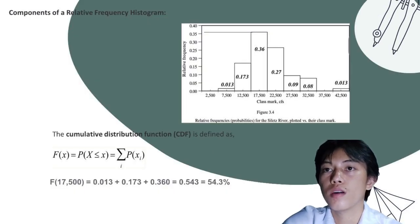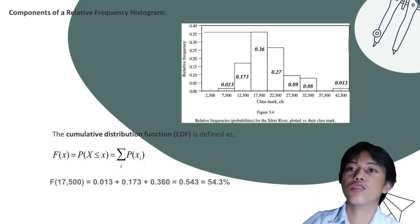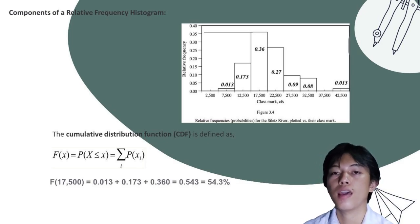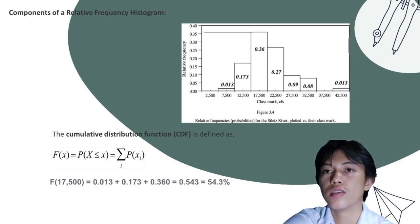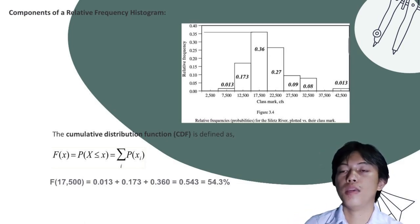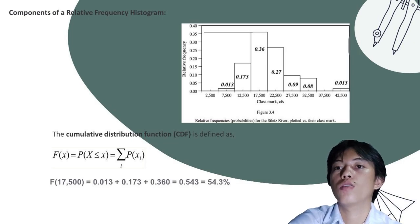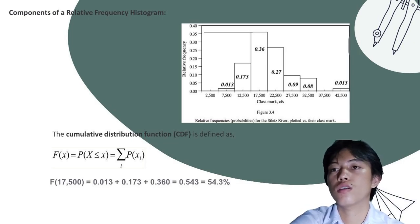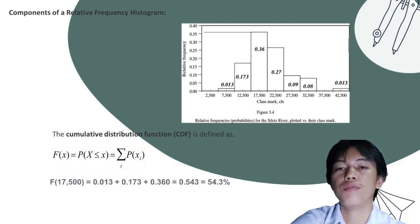This is an example of relative frequencies or probabilities for a select river plotted versus their class mark. The cumulative distribution function (CDF) is defined as F(x) equals P(X ≤ x) equals the summation of P(X-sub-i). The total value of x is 17,500, and P(X ≤ x) equals 0.013 plus 0.173 plus 0.360, which sums to 0.540 or 54.3%.